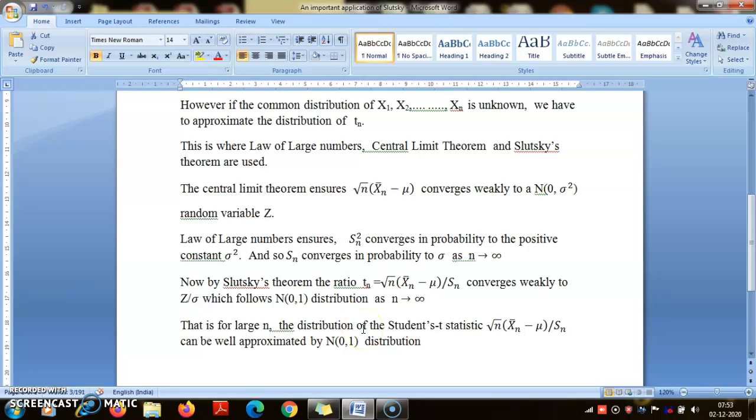Why robustness? Because for whatever be the distribution of Xi's, as long as they have finite variance—they are coming from a distribution with finite variance—√n(X̄n - μ)/Sn, which is the Student's t statistic, is always well approximated by the normal distribution.